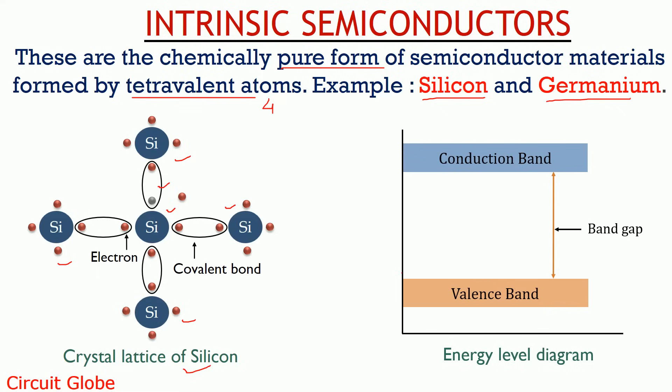Let's now have a look at the energy band diagram of intrinsic semiconductors. As we discussed, with increase in temperature, electrons leave their position vacant and get free. The electrons are present in the valence band, but once some external heat is provided, these electrons get free and move to the conduction band, thereby causing conductivity to increase and resultantly causing the resistance of the semiconductor to decrease.